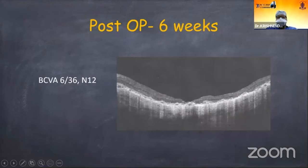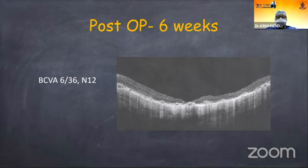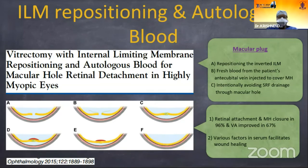The post-operative outcome at six weeks showed vision improved from counting fingers to 3/60, but there is thinning of the fovea visible on imaging. Often you succeed in closing the macular hole, even though the visual outcome may not be good. ILM repositioning with autologous blood is another technique that can be used in such cases of macular hole with myopia with relatively good results.